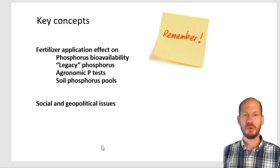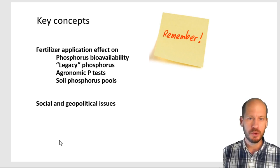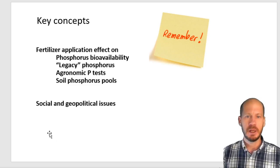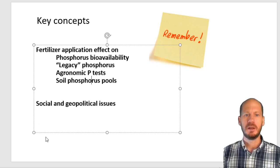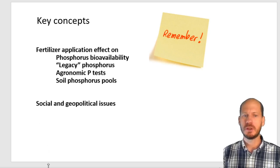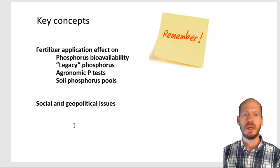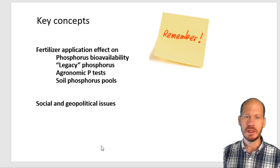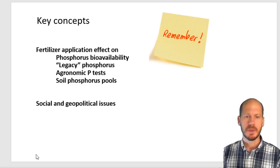The key concepts to remember from this lecture are: when you need fertilizer application and when you don't; how to measure phosphorus availability to plants; the concept of legacy phosphorus; agronomic tests for measuring availability; the different pools of phosphorus in the soil; different chemical types in bioavailability pools; and the social and geopolitical issues regarding phosphorus production and use. Thank you for joining and see you next lecture.